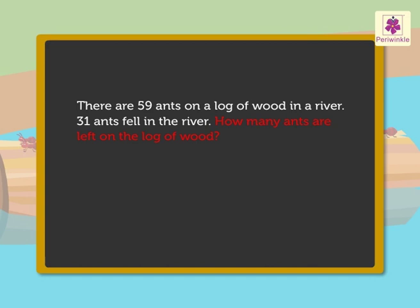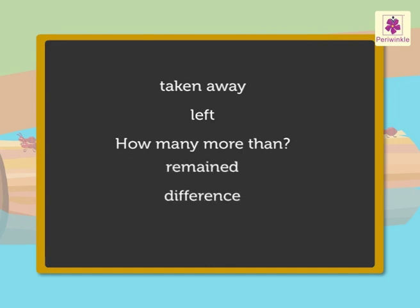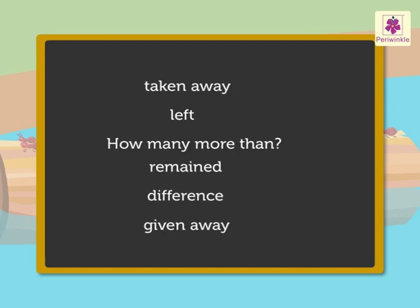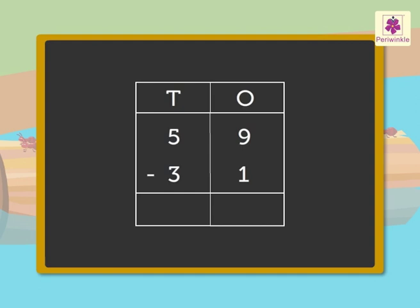How many ants are left on the log of wood? Remember, when the words taken away, left, how many more than, remained, difference, or given away come in the story, then we have to subtract the numbers given in the information. Here, we have to subtract 31 from 59 to find the answer.